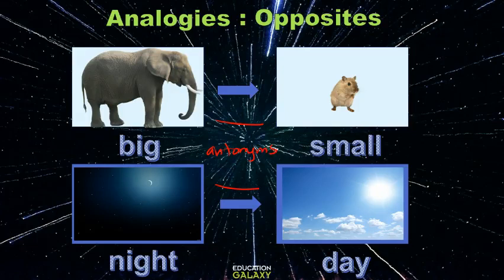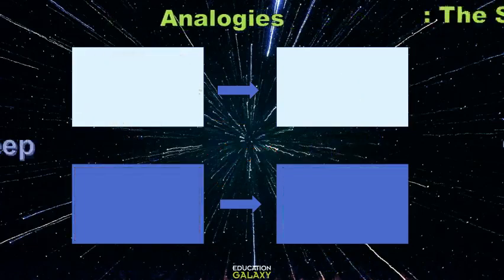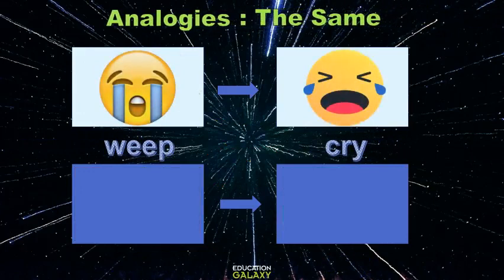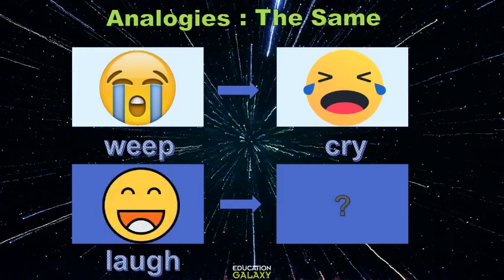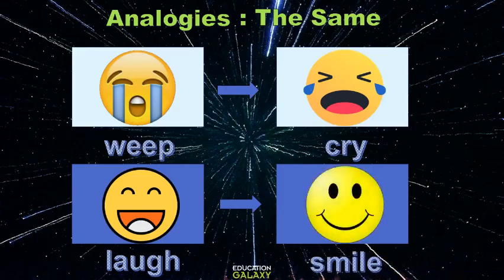Let's look at another type of analogy. Weep and cry have similar or the same meaning, so the other word relationship will have a similar relationship. What is a similar word to laugh? It is smile. So these use a synonym as the word relationship. Now you know there are two kinds of analogies: one is the opposite, and two is the same.